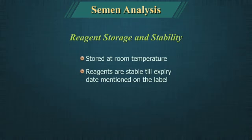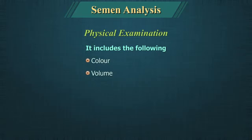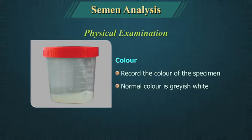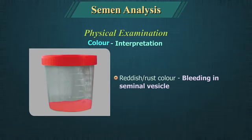Physical examination of semen includes colour, volume, liquefaction time and viscosity. Colour: Record the colour of the specimen. Normal colour is greyish-white. A yellowish colour may indicate pyospermia, and a reddish or rust colour may indicate bleeding in the seminal vesicle.